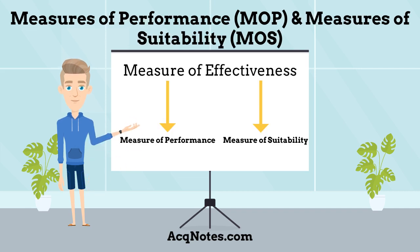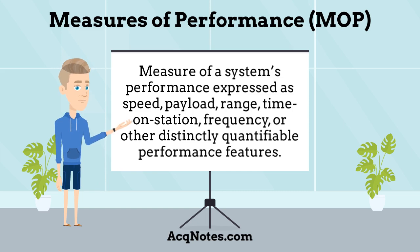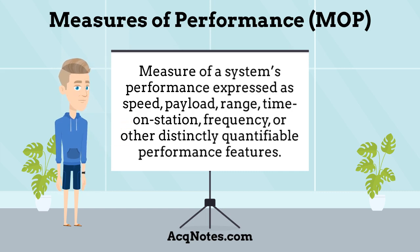Measures of effectiveness can be broken down into measures of performance and measures of suitability. Several measures of performance and/or measures of suitability may be related to the achievement of a particular measure of effectiveness. A measure of performance is a measure of a system's performance expressed as speed, payload, range, time on station, frequency, or other distinctly quantifiable performance features. The definition from the Joint Center for International Security Force Assistance Planning Guidance states: measures of performance are necessary for correlation to specific measures of effectiveness in order to determine the optimal levels of effort for objective achievement. A careful analysis of the relationship between MOPs and MOEs reveals the need to shift courses of action if the current plan is inefficient or has adverse effects.